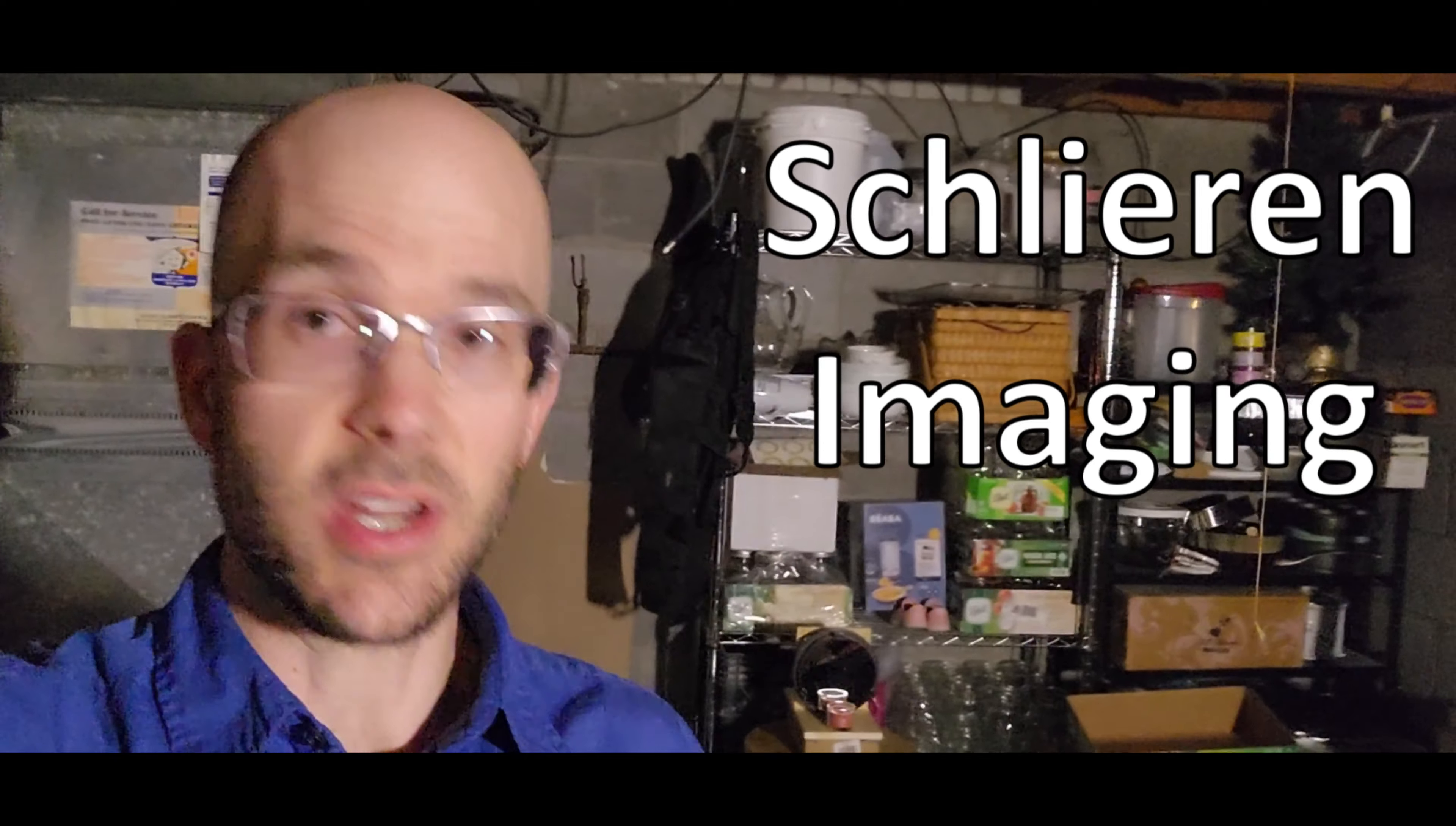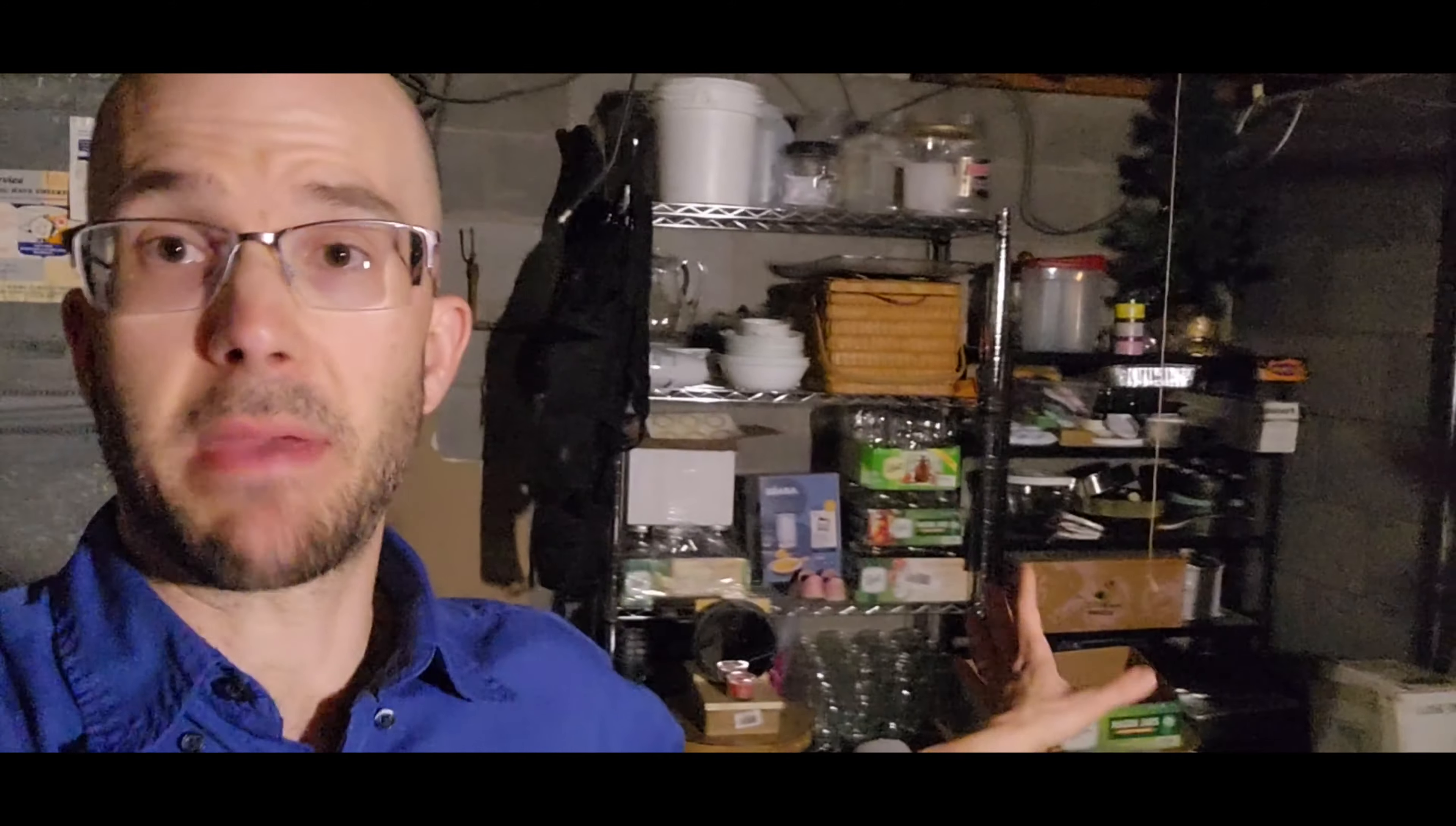In video one I showed you a traditional Schlieren setup in which you use a razor to actually image differences, very slight differences in the density of a transparent fluid such as air. And the hardest thing to get a hold of that you need is a parabolic mirror of pretty decent quality. You're also going to need a point source of light which is easy to produce, a razor and a decent camera. That's really it. It's really easy to set up.